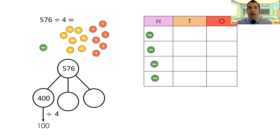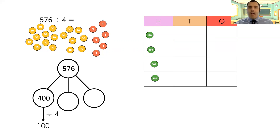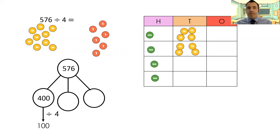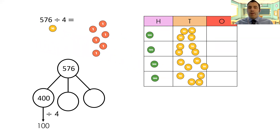I'm left with 176. I need to find another way of partitioning that down. I'm going to exchange my 100 for 10 tens — we know that 10 times 10 makes 100. So I've now got four lots of 10 in each row, and I've still got one 10 left over. Going back to my part-whole model, I'm going to take 160 as the second part, which leaves me with 16.